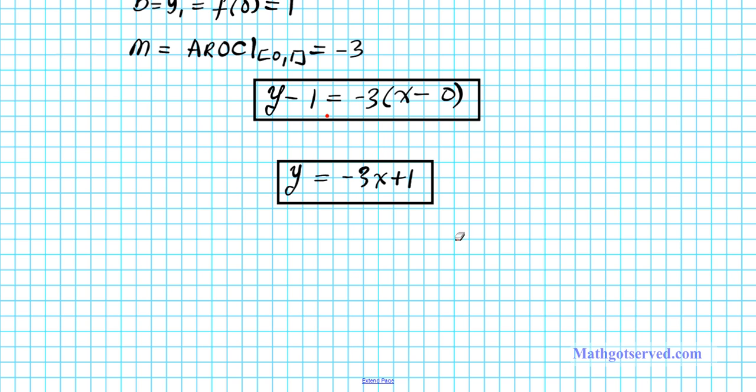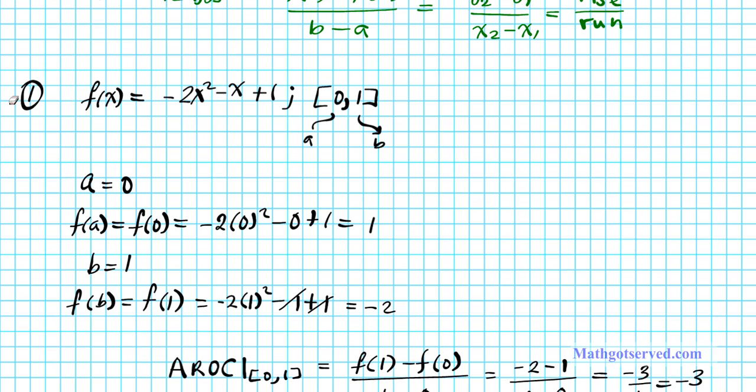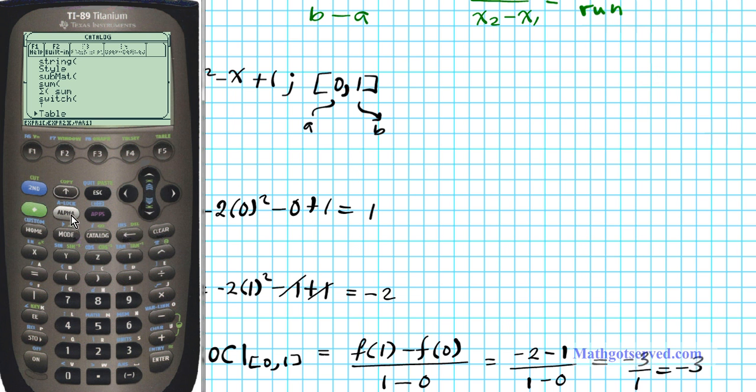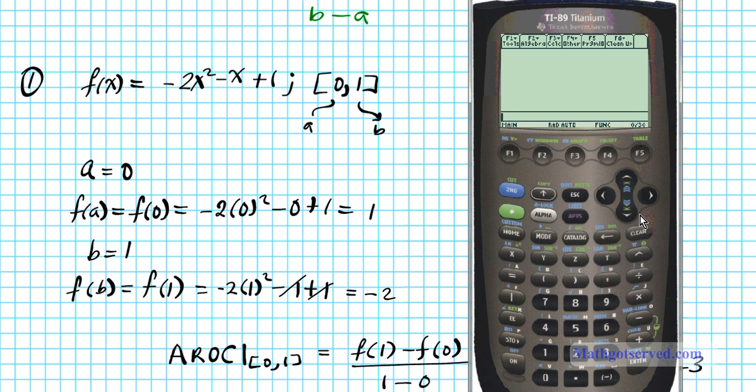Now, let me go ahead and show you a shortcut on how to find the slope of the secant line on a given interval using the TI-89 titanium calculator. So let's go ahead and try it out. What I'm going to do first is define a function and call it -2x² - x + 1. So how do we define a function? All you simply do is store the function -2x² - x + 1.